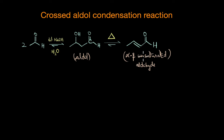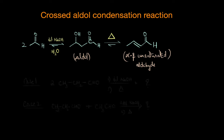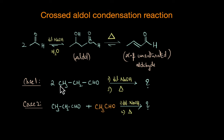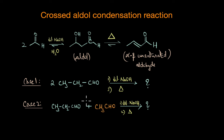So based on this, can you figure out the products that would be obtained in these two cases? In the first case we have two moles of an aldehyde undergoing aldol condensation reaction. In the second case, instead of having two moles of the same aldehyde, we have two different aldehydes — one is a propanal and the other one is an acetaldehyde. So can you predict the products formed in these two cases?